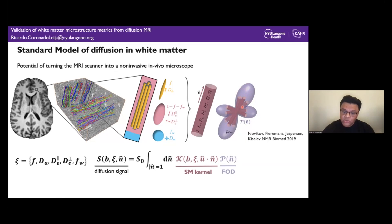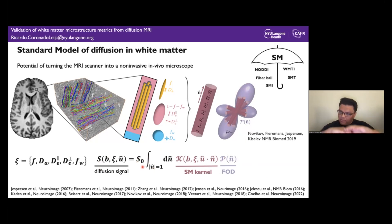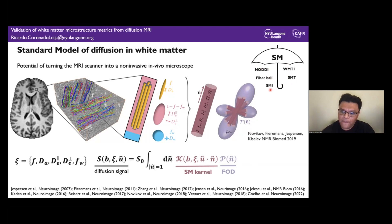The diffusion signal is then the convolution of the kernel and the FOD. This standard model framework encompasses several models proposed in the literature, such as NODDI, FiberBot, WMTI, SMT, and SMI.